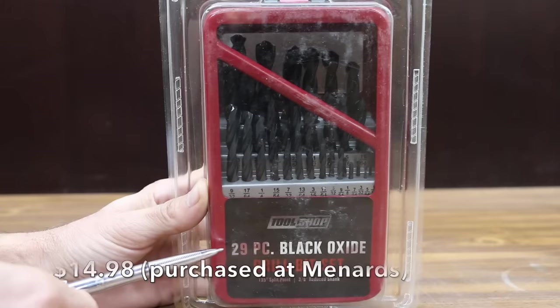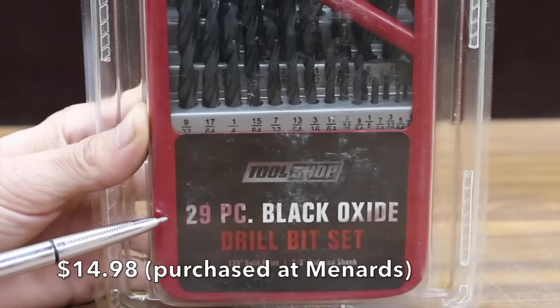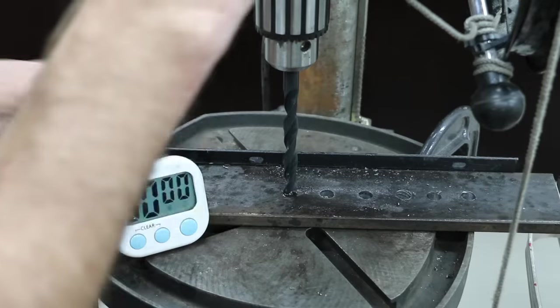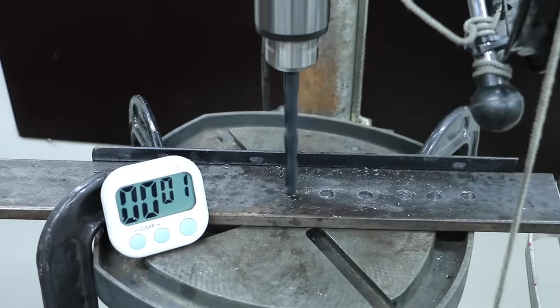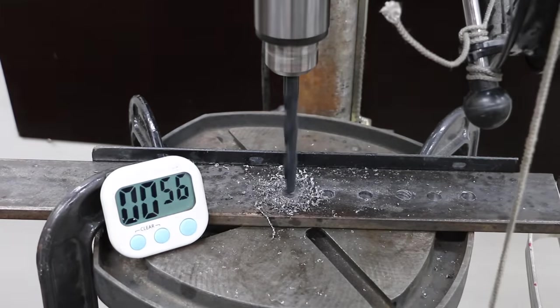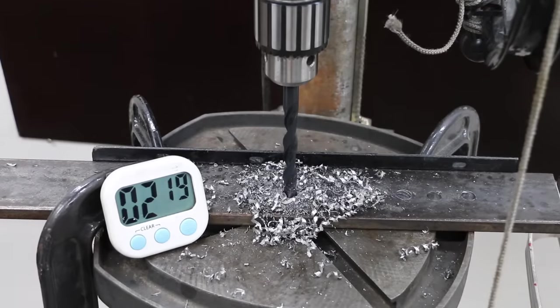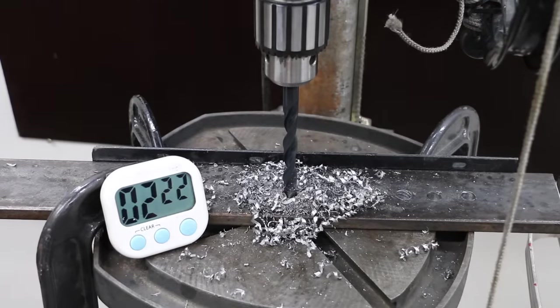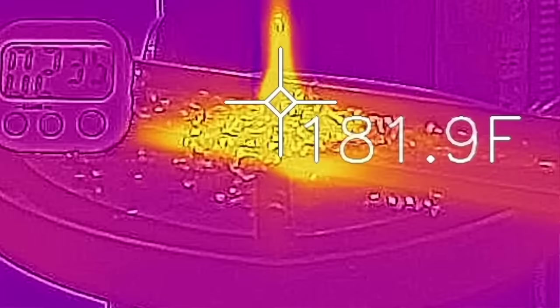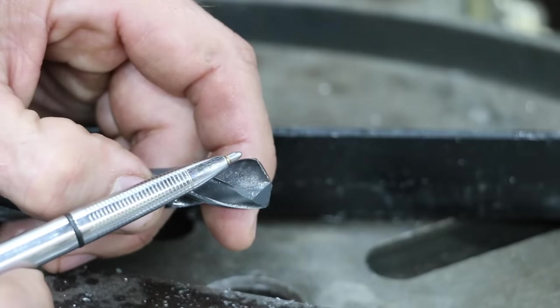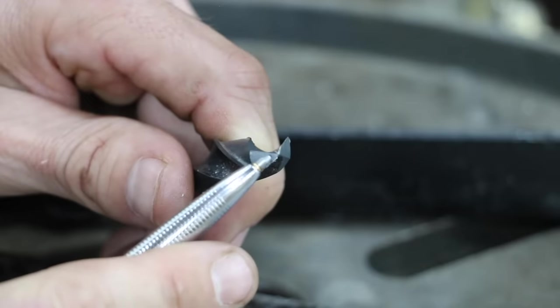Costing $14.98, this Tool Shop brand, which is sold at Menards, is a 29-piece Black Oxide set. About 2 minutes and 19 seconds for the Tool Shop bit. This drill is pretty hot at about 190 degrees Fahrenheit. Definitely not the same quality of drill that we've seen with some of the other brands. A little bit of wear on the chisel as well.